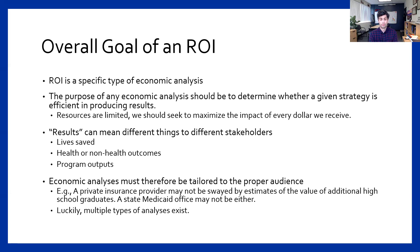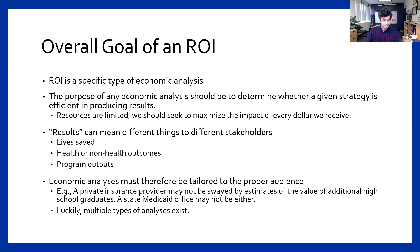Likewise, knowing nothing about a state Medicaid office other than that they administer the state Medicaid program, we might predict they emotionally care about high school graduates — but they also have a budget and statutory responsibilities. So they may not be able to make any changes because of an ROI that looks at high school graduation rates. We have to tailor our analysis to our audience, and luckily there are multiple ways of doing that.